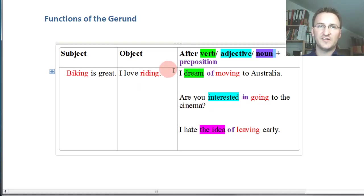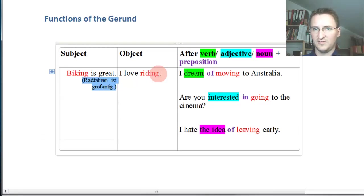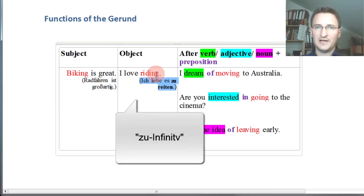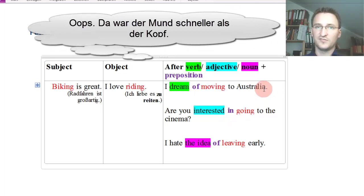But how do we translate these sentences into German? Easy enough. Biking is great. Radfahren ist great. I love writing. Either we could say 'ich liebe das Reiten' as a general habit, or we could also say 'ich liebe es zu reiten.' And actually, this is a translation for the gerund that is very often used. Similarly, the sentence 'I dream of moving to Australia' translates as 'ich träume davon nach Australien zu ziehen.'